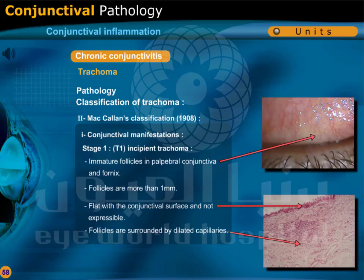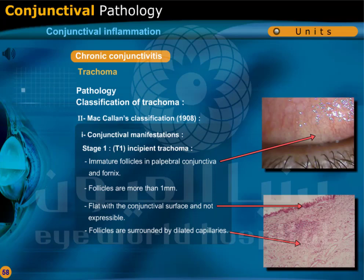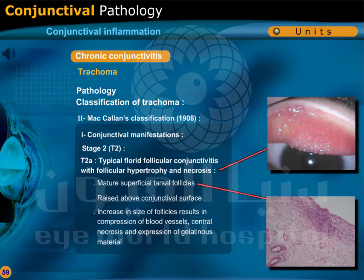Stage 1 (T1): Incipient trachoma. Immature follicles in the palpebral conjunctiva and fornix. Follicles are more than 1 mm, flat with the conjunctival surface and not expressible. Follicles are surrounded by dilated capillaries. Stage 2 (T2): T2A — typical florid follicular conjunctivitis with follicular hypertrophy and necrosis.